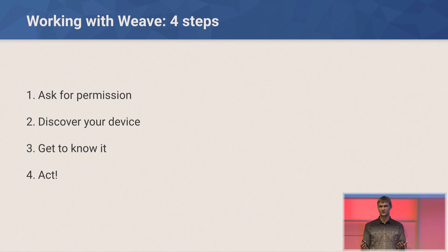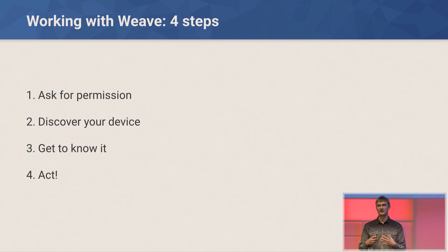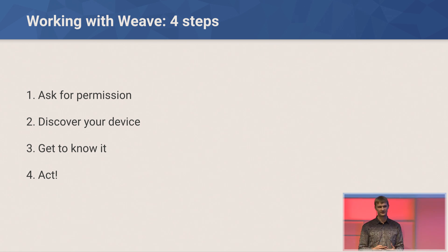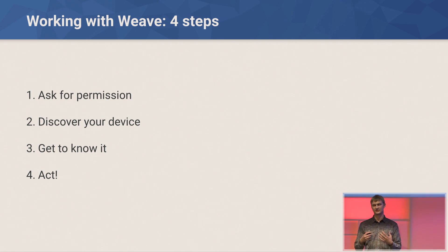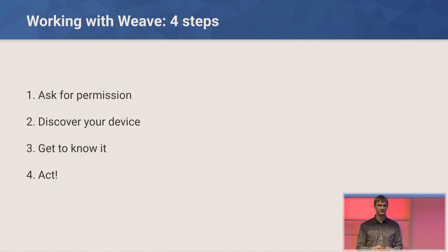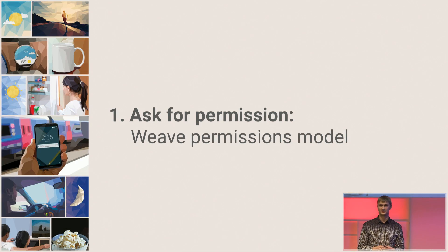Working with Weave devices involves four steps. First, you need to ask the user for permission to grant access to a Weave device for your application. Second, you need to find the device you're going to work with. Third, you need to get to know your device — is it the right type, is it ready for use, does it have the right features? And fourth, act — send commands to your Weave device. We're going to walk over each of these steps in more detail.